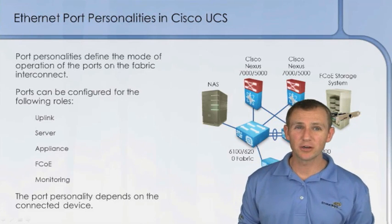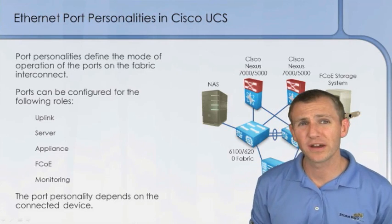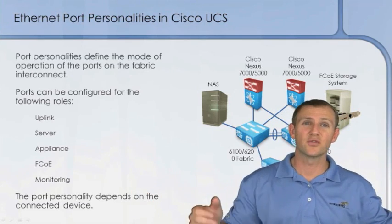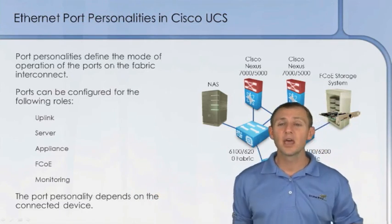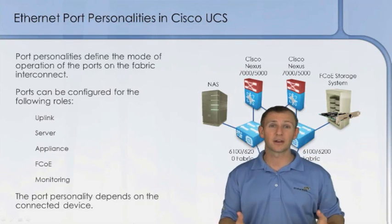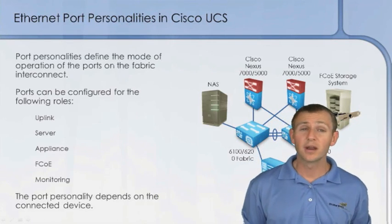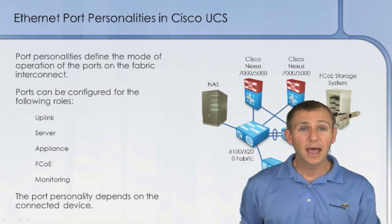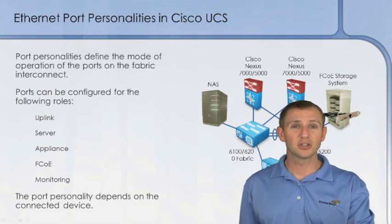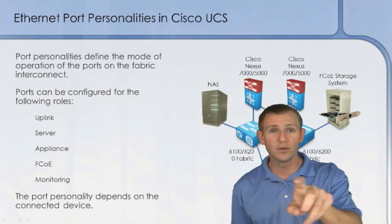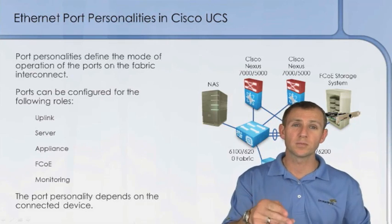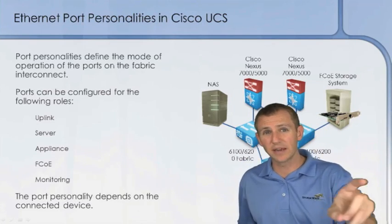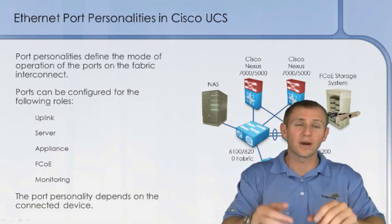When we take a look at the 6200, those are what they call unified ports. So the ports that you're looking at — perhaps we've got a 6248, we've got 48 ports across — what we have to do is tell the Fabric Interconnect what those ports are going to be used for. These are going to be configured as either ethernet ports or fiber channel ports by going into the UCS manager, selecting a little slider, and moving it from left to right. We're going to have to group those ports in pairs of two. Fiber channel comes from right to left as we move the slider across, ethernet from left to right.